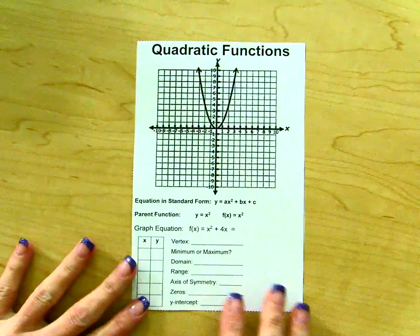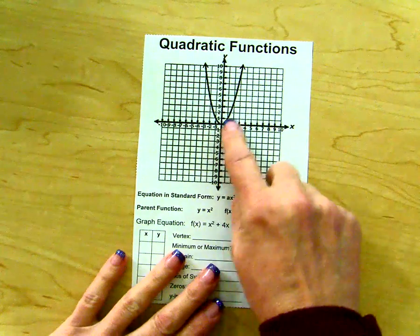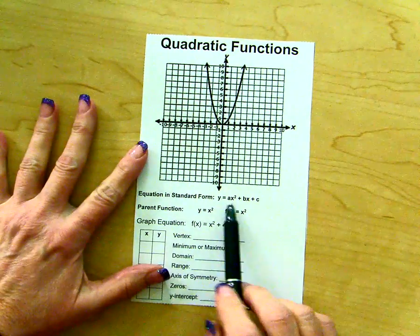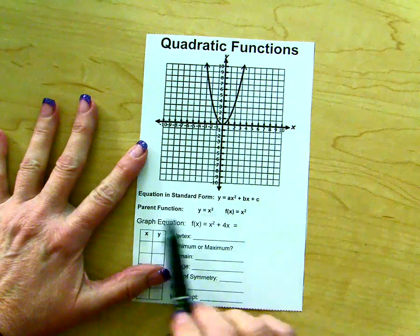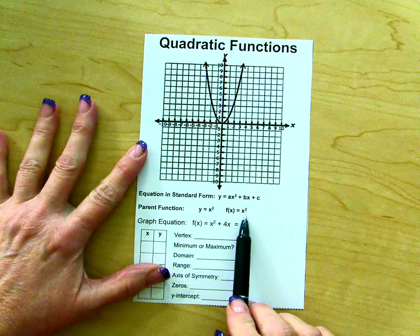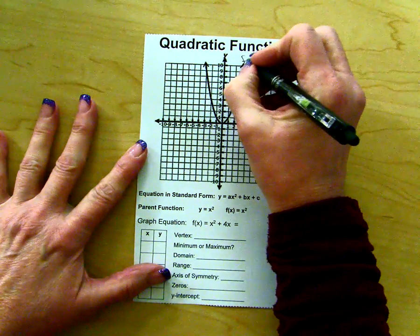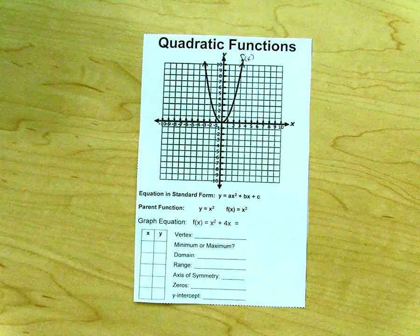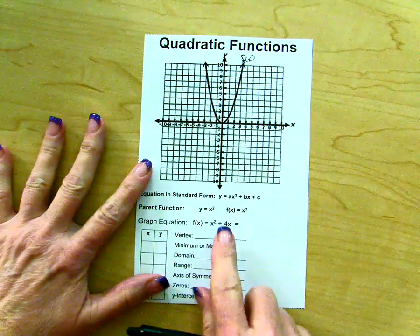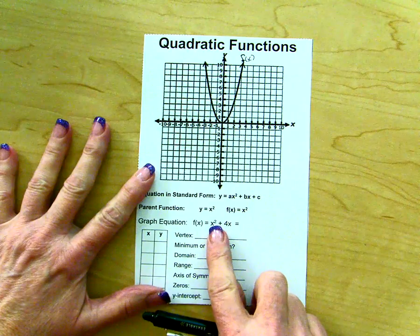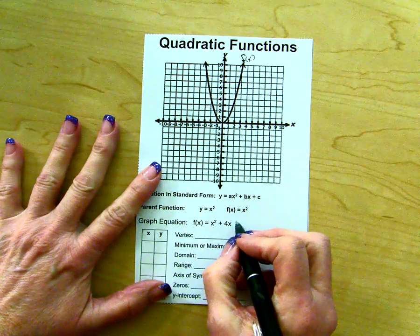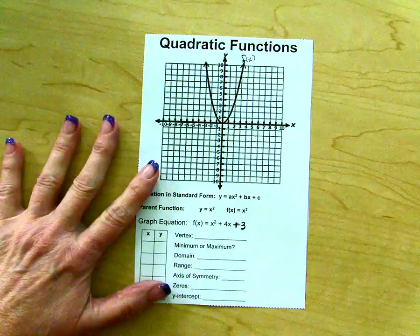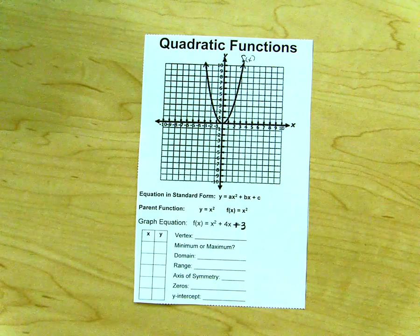So here we have our notes page. It already has the parent function for the quadratic function graph. The standard form is y equals ax squared plus bx plus c. The parent function is y equals x squared, also f of x equals x squared, so we could call this one f of x. We have an example here that we're going to graph but we have a little bit of an error. Instead of saying x squared plus 4x equals, this should actually say plus 3. So we're going to go ahead and fix that.